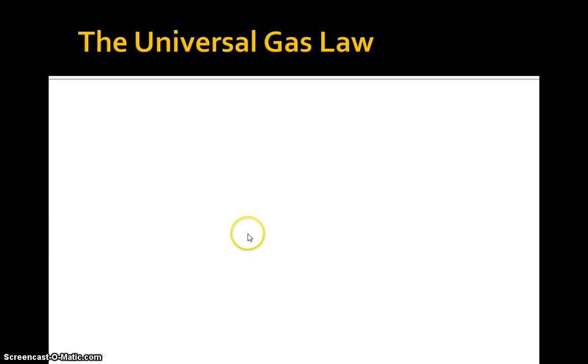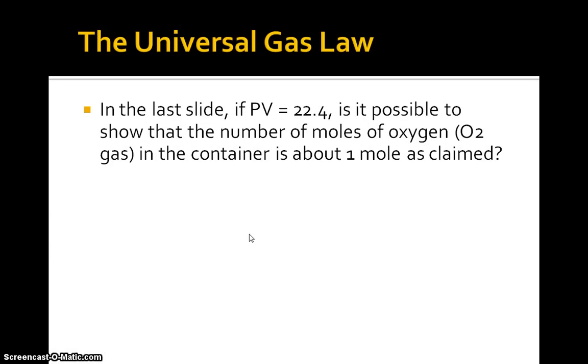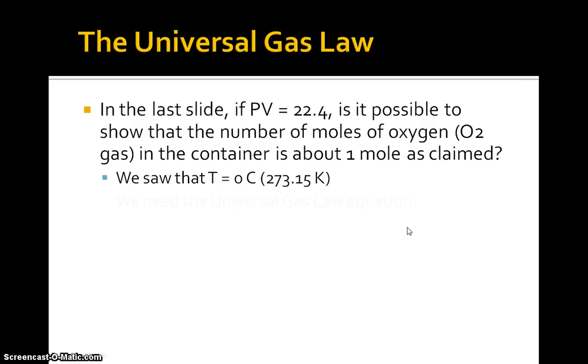Now, let's talk about the universal gas law. In the last slide, if PV is, if we accept P times V to be, on average, 22.4, is it possible to show that the number of moles of oxygen in the container is about one mole as claimed? Well, we also saw that T is 0 degrees Celsius (273.15 K). And now, to use the universal gas law, we must use Kelvins. So we have to now convert that to 273.15 Kelvins. And of course, we also need the universal gas law equation, PV equals NRT. Well, we already got the PV part, and we know what N is. It's 1.